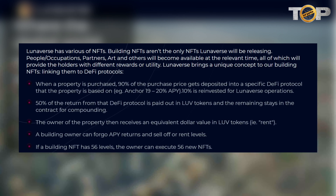When a property is purchased, 90% of the purchase price gets deposited into a specific DeFi protocol — for example, Anchor at 19–20% APY. 0.10% is reinvested for Luniverse operations. 50% of the return from that DeFi protocol is paid out in LOVE tokens and the remaining stays in the contract for compounding. The owner of the property then receives an equivalent dollar value in LOVE tokens — essentially rent. A building owner can also forego APY returns and sell off or rent levels; if a building NFT has 56 levels, the owner can execute 56 new NFTs.